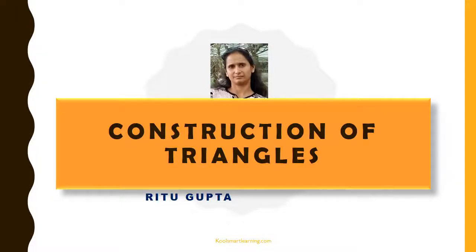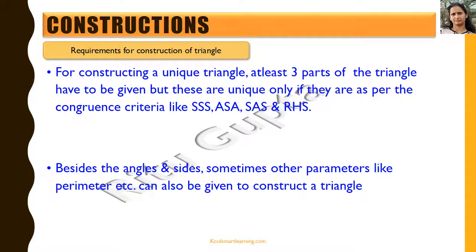Hello friends, we are going to see the construction of triangles in this session. For constructing a unique triangle, at least three parts of a triangle have to be given, but those three parts have to meet the congruency criteria. SSS, ASA, SAS, and RHS are the criteria for congruence, so if these three parameters are given we can construct a unique triangle.